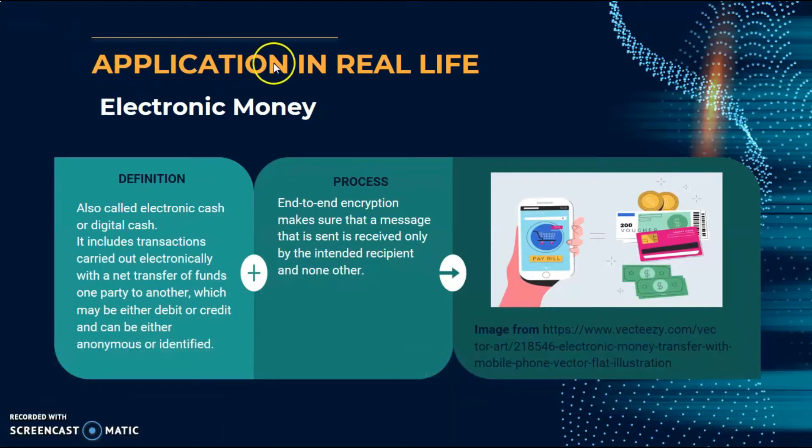Next we go to application of cryptology in real life. For the first application is electronic money. Actually, electronic money is also called electronic cash or digital cash. It includes transactions carried out electronically with a net transfer of funds from one party to another, which may be either debit or credit, and can be either anonymous or identified. The process of electronic money is end-to-end encryption, which makes that the message that is sent is received only by an intended recipient and no one other.